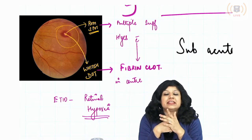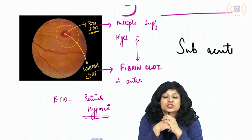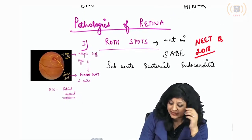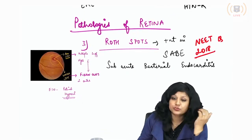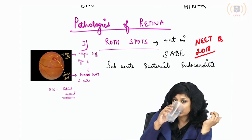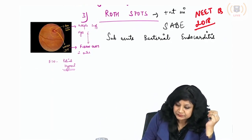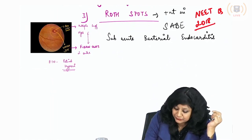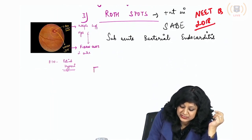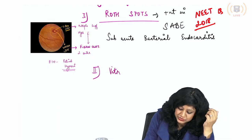This is the integration — you can get an integrated question on medicine and ophthalmology pertaining to Roth spots. The second topic is vitreous hemorrhage.